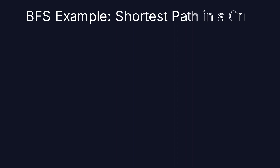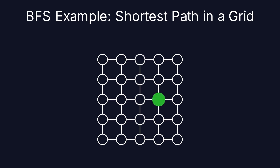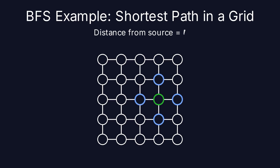BFS is perfect for finding the shortest path in a grid because it explores all possible routes level by level. Starting from the source, BFS spreads out evenly, checking all nodes at the current distance before moving on. Each level of nodes is visited one at a time, showing how BFS guarantees the shortest path by exploring all nodes at each level before proceeding.